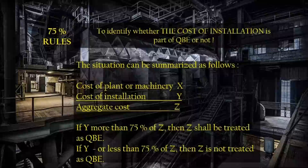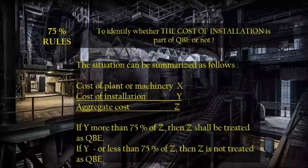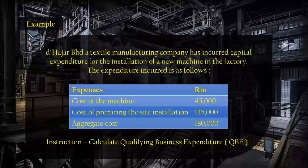X equals cost of installation, Y equals aggregate cost, Z. If Y is more than 75% of Z, then Z shall be treated as QBE. If Y is equal to or less than 75% of Z, then Z is not treated as QBE. Example.